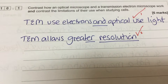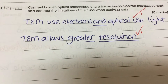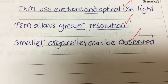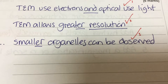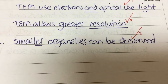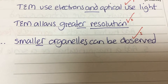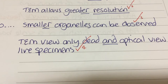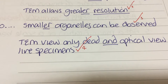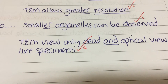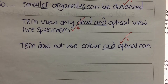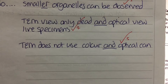We're going to say that a transmission electron microscope uses electrons and an optical microscope uses light. The 'and' in there is really important because that's what makes it a contrasting statement. A TEM allows greater resolution — we don't have to add an extra contrasting statement because the word 'greater' already means more than. Because it has greater resolution, smaller organelles can be observed.